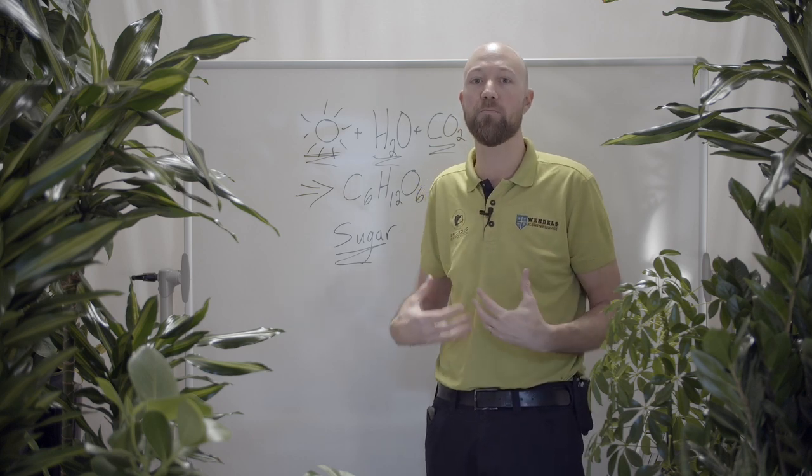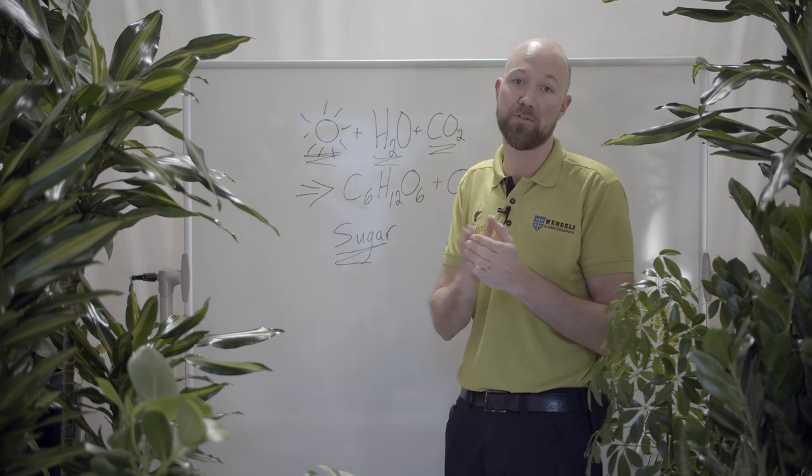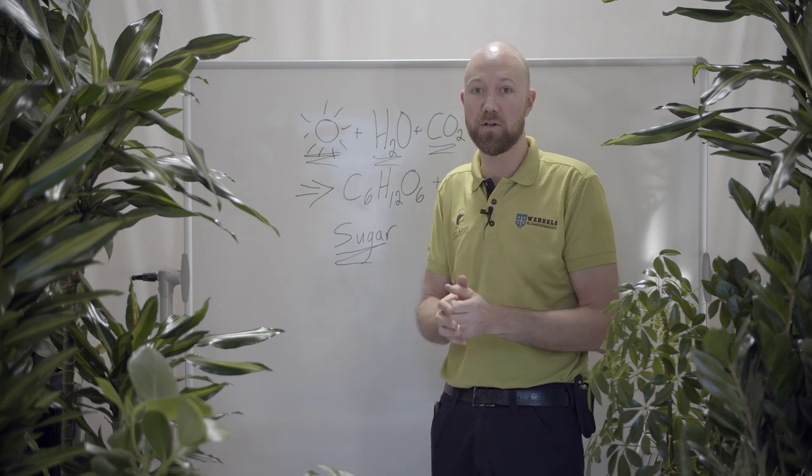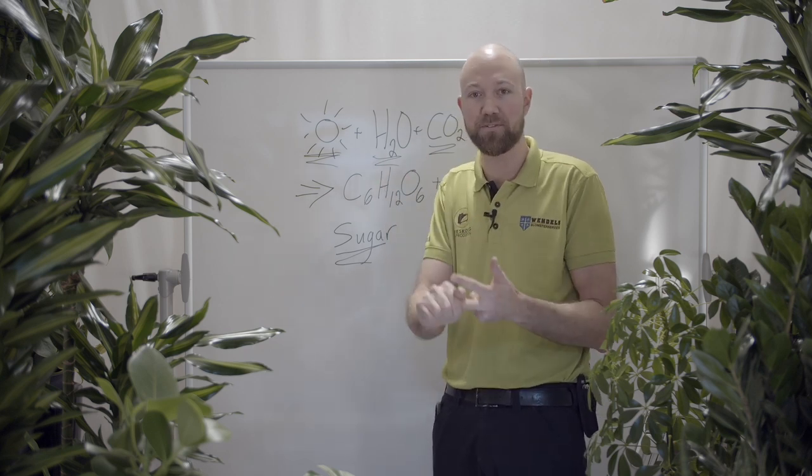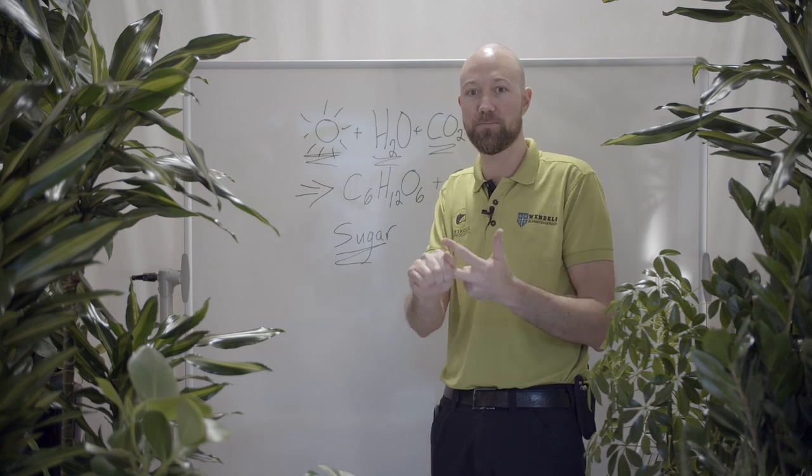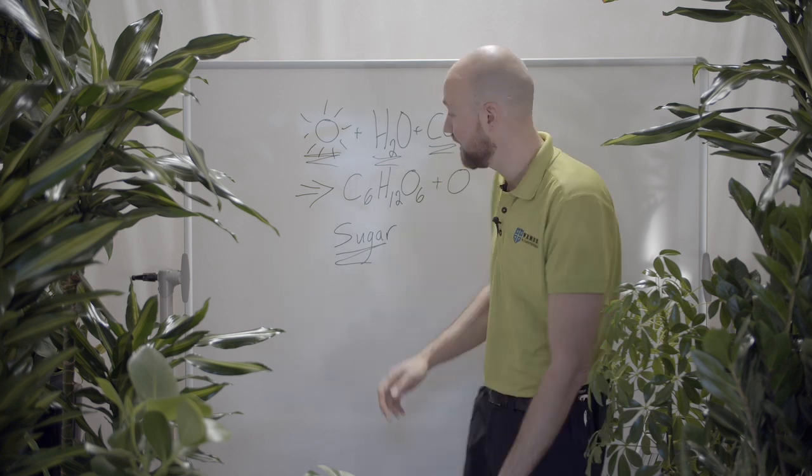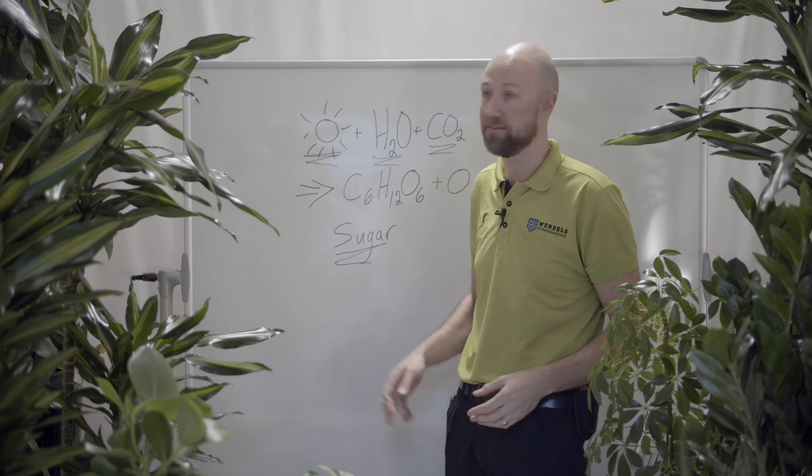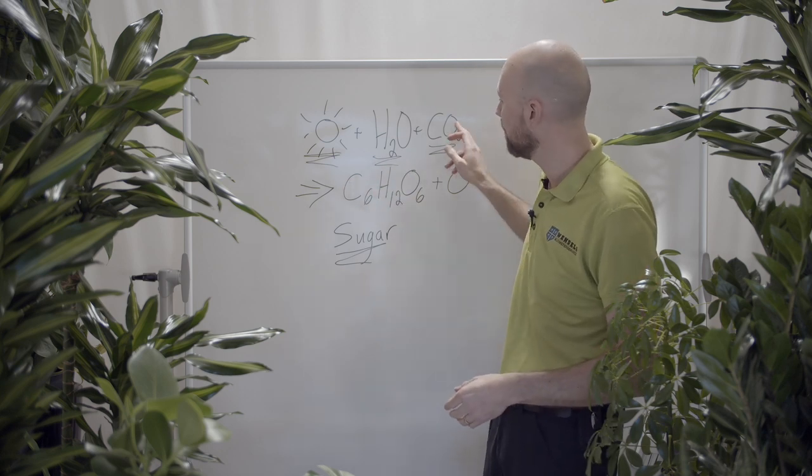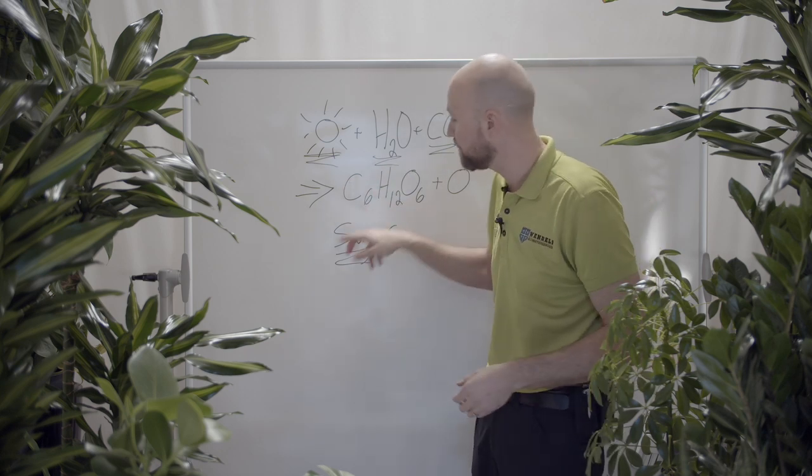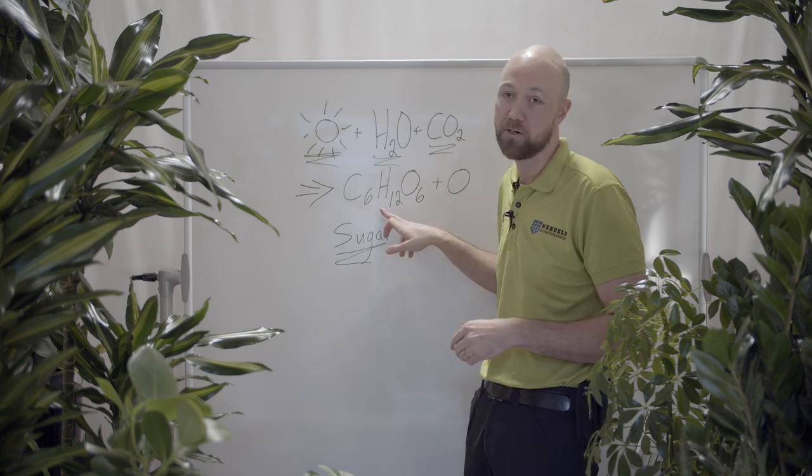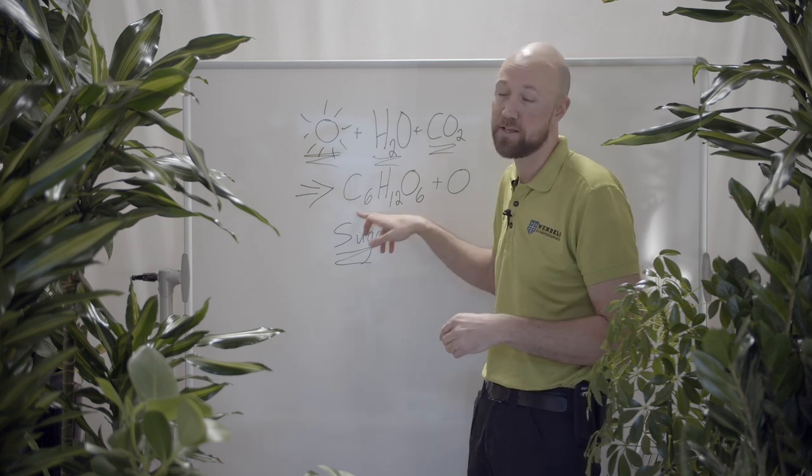To summarize, if you want a healthier, bigger, fatter plant, you need to give it more food. The food is the photosynthesis. Light, water, carbon dioxide, which produces glucose or, in another word, sugar. That is the food.